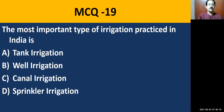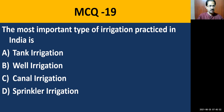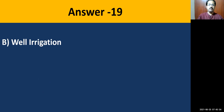MCQ nineteen: The most important type of irrigation practiced in India is — tank irrigation, well irrigation, canal irrigation, or sprinkler irrigation. The most widely practiced type of irrigation is well irrigation.